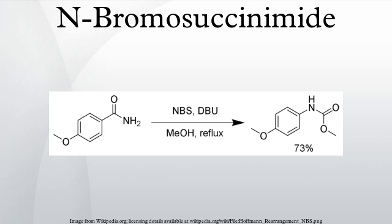Addition to alkenes: NBS will react with alkenes in aqueous solvents to give bromohydrins. The preferred conditions are the portionwise addition of NBS to a solution of the alkene in 50% aqueous DMSO, DME, THF, or tert-butanol at 0°C.